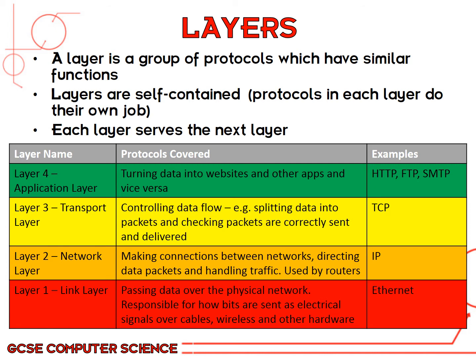If you're using an email app to send an email, you'll use the SMTP protocol on the application layer. The next layer is the transport layer, which controls data flow — this is where data is split into packets and sent correctly, and where TCP is specifically used. The next layer is the network layer, which makes connections between networks, sets up transmission, and directs packets to the correct place — this would be used by routers. The final layer is the link layer, which actually passes the data over a physical network and is responsible for how bits are sent as electrical signals, whether it's a wireless or wired connection.